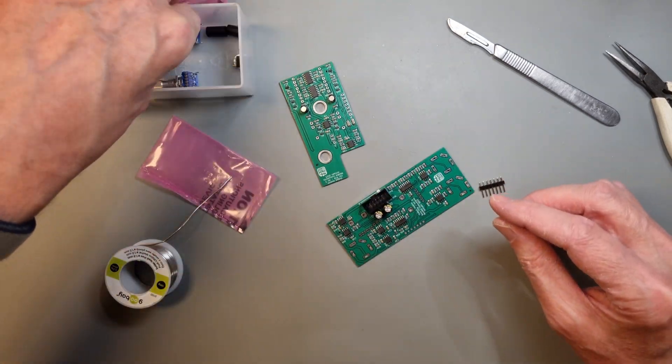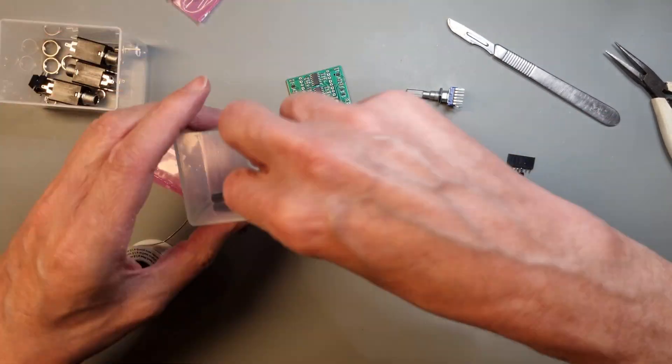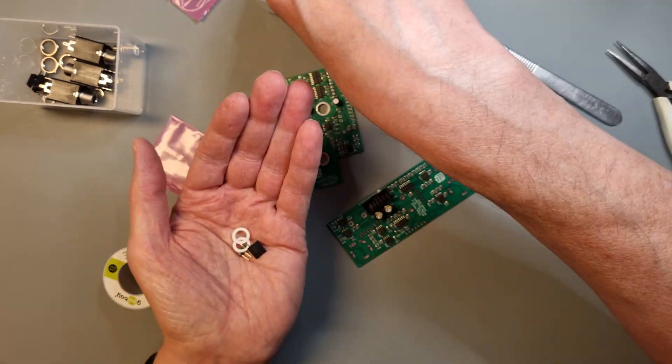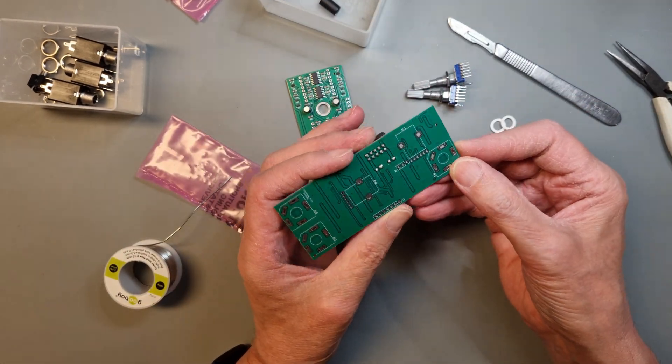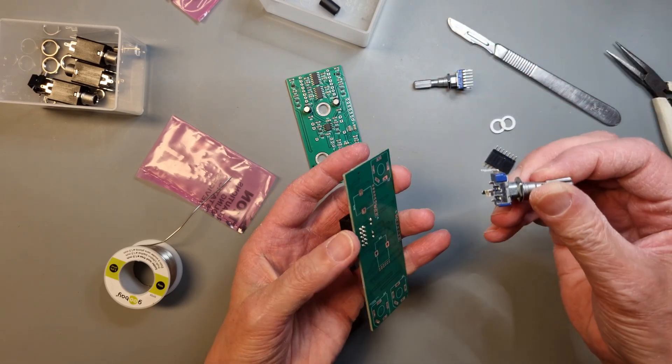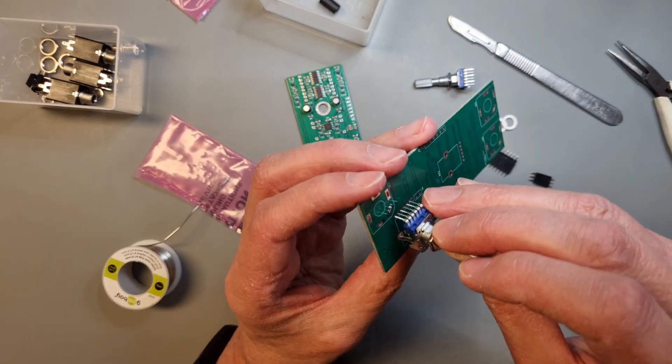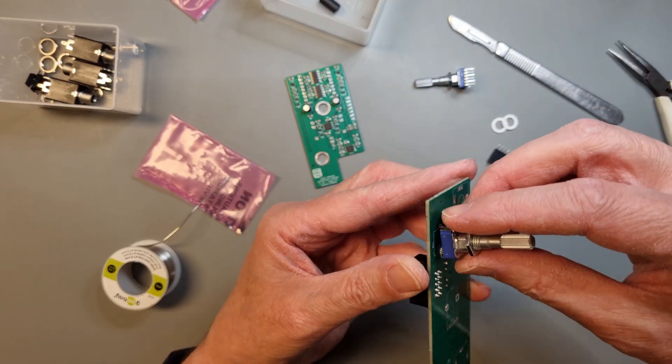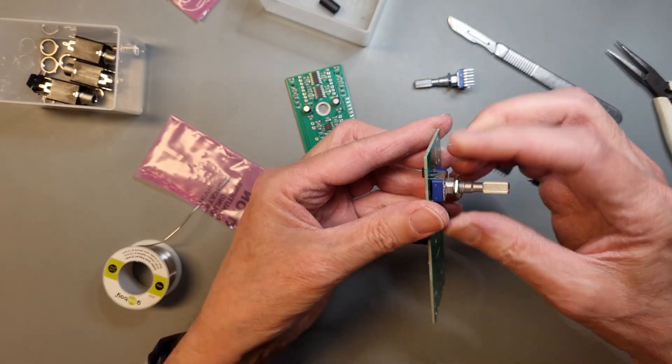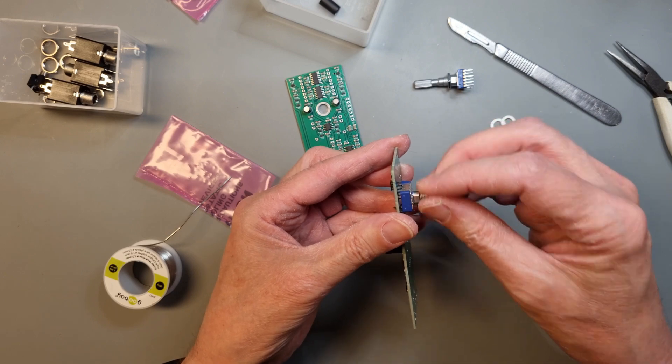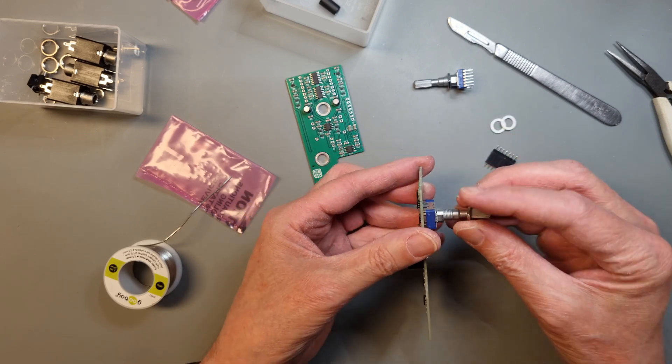Now it's time to mate the boards together, electrically and mechanically for the first time. This will be done using the potentiometers and the single row header connectors. First of all, mount the dual ganged potentiometers to the top side of the main PCB. Make sure that the pots are properly seated onto the PCB. This is very important in order to make the module go together in a good way.